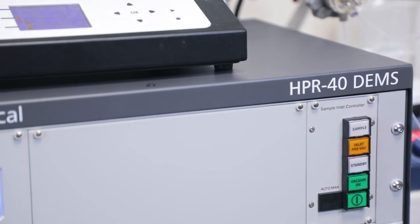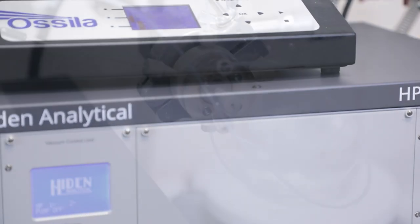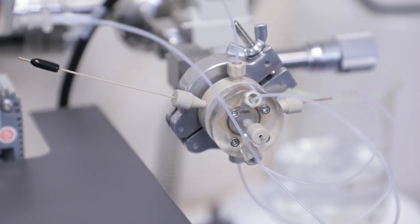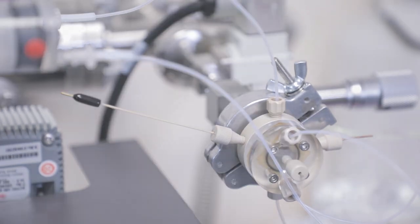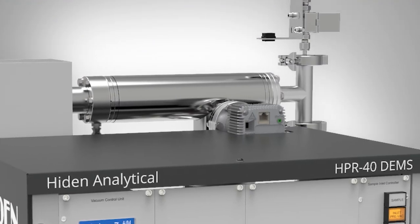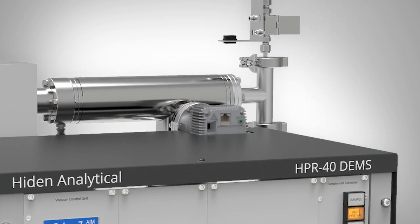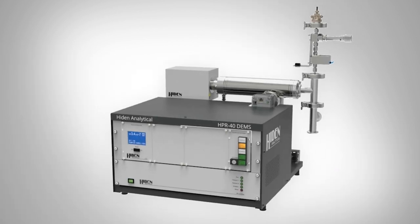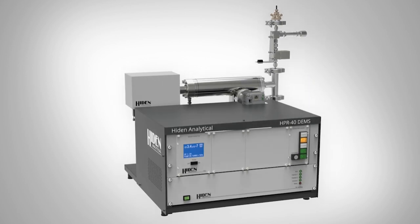DEMS is an analytical technique in which an electrochemical cell is interfaced with a mass spectrometer using a pervaporation membrane. This configuration enables volatile electrochemical reaction products to be quantified in real time, allowing key parameters such as the rate of product evolution and reaction selectivity to be determined and monitored.